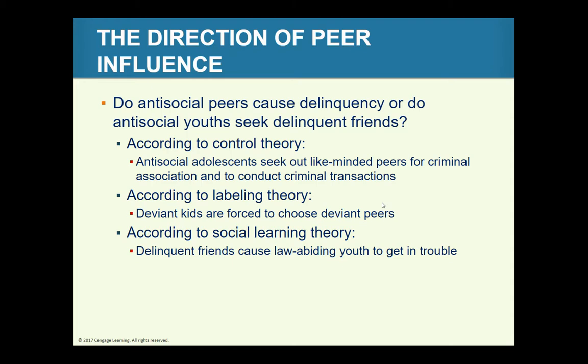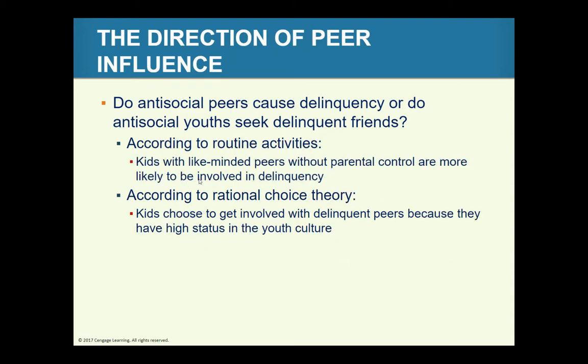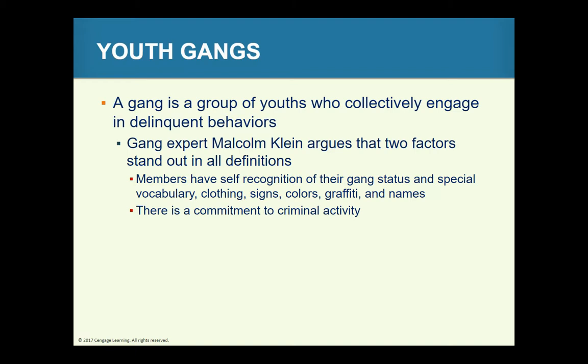You can see on this slide how the different sociological theories relate to peer delinquency. Youth gravitate towards cliques, and those cliques provide them with support, assurance, protection, and direction. Peers provide the social and emotional basis for antisocial activity.